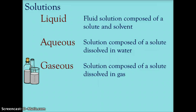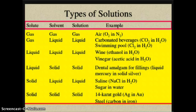What types of solutions do we have? We have liquid solutions, aqueous solutions, gaseous solutions, and even solid solutions. In a liquid solution, it's a fluid solution composed of a solute and a solvent. An aqueous solution is a solution composed of a solute always dissolved in water. Gaseous solutions are composed of some type of material — solid, liquid, or gas — dissolved into a gas. In a solid state, you have things like brass and bronze, where you have metal alloys joining together.